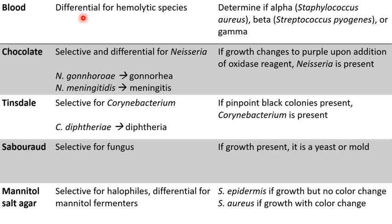The blood agar plate is differential for hemolytic species, meaning it allows you to differentiate and identify species based upon their ability to destroy red blood cells. If a species is alpha hemolytic, it most likely belongs to Staphylococcus aureus — alpha hemolytic species partially destroy red blood cells, leaving a greenish halo around the outside of the growth. If the growth is beta hemolytic, it is most likely Streptococcus pyogenes, which completely destroys red blood cells, leaving a clear halo. Gamma hemolytic species will grow on the plate but show no reaction around the area of their growth.